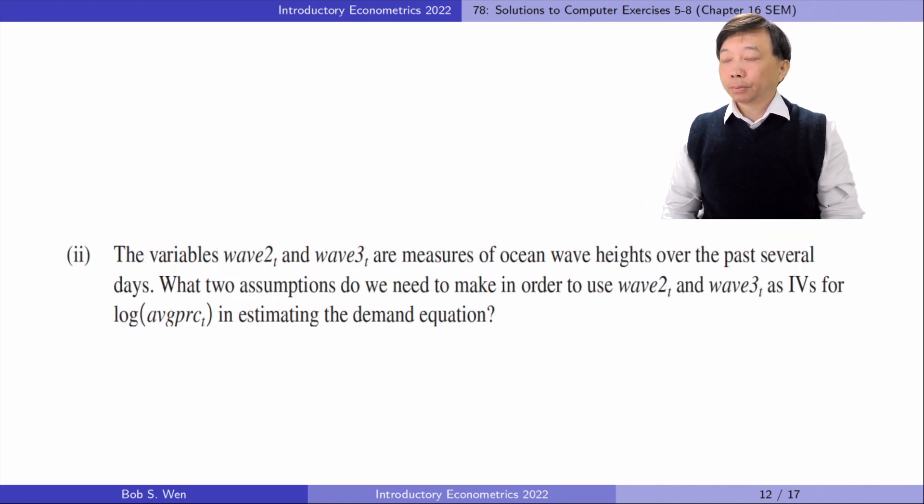In part 2, the variable wave2 and wave3 are measures of ocean wave heights over the past several days. What two assumptions do we need to make in order to use them as IVs for log average price in estimating the demand equation? The two assumptions are the instrument relevance requirement and the instrument exogeneity requirement. The former requires the endogenous variable to be sufficiently correlated with the IVs. The latter requires the IVs not to be correlated with the error term in the demand equation. In other words, the two wave variables should appear in the supply equation but not appear in the demand equation.